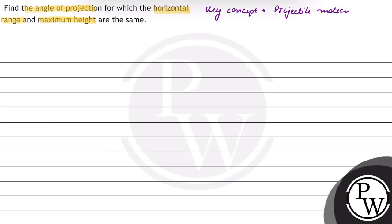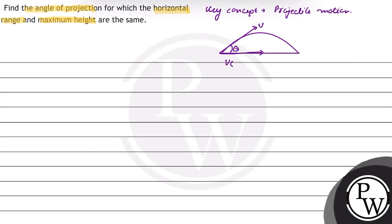In projectile motion, a particle is thrown near the Earth's surface at an angle theta with velocity V, such that its horizontal component of velocity is V cos theta, and the vertical component of velocity is V sin theta. In the vertical direction, there is a constant downward force acting due to gravity.